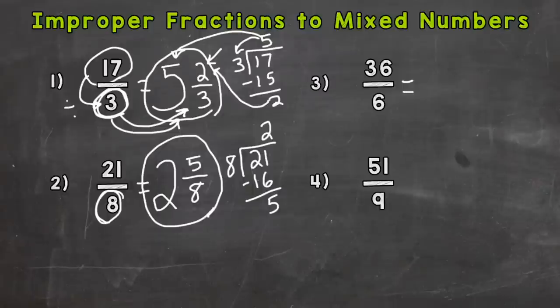Number 3, we have 36 sixths. So 36 over 6. So the first step is divide. We need to do 36 divided by 6. And so we need to think, how many whole groups of 6 can we pull out of 36? And the answer to that is 6, right? And we hit 36 exactly.